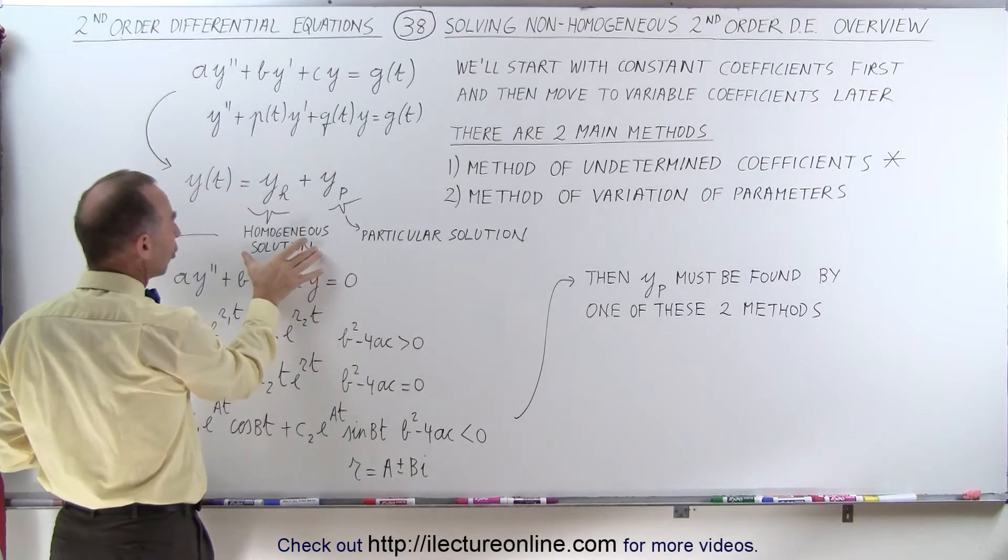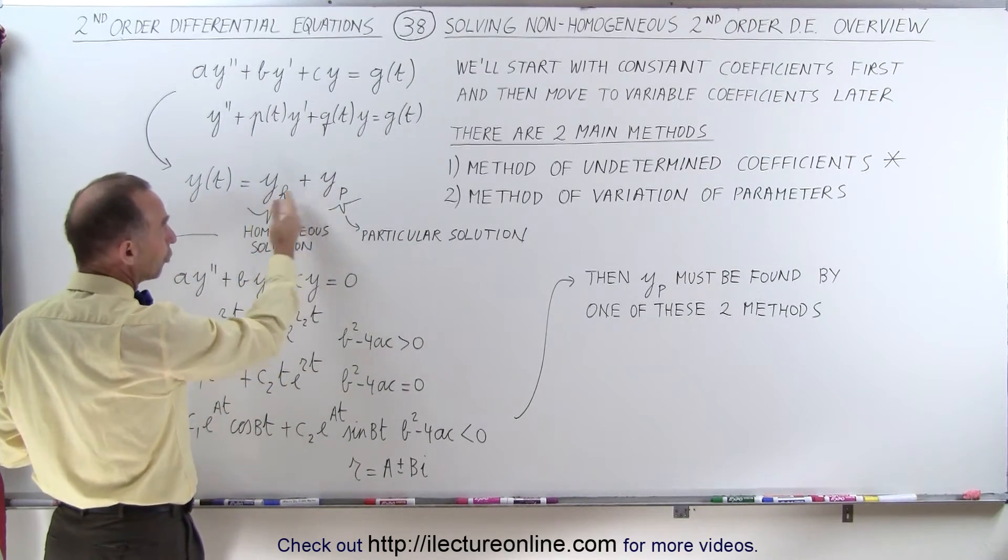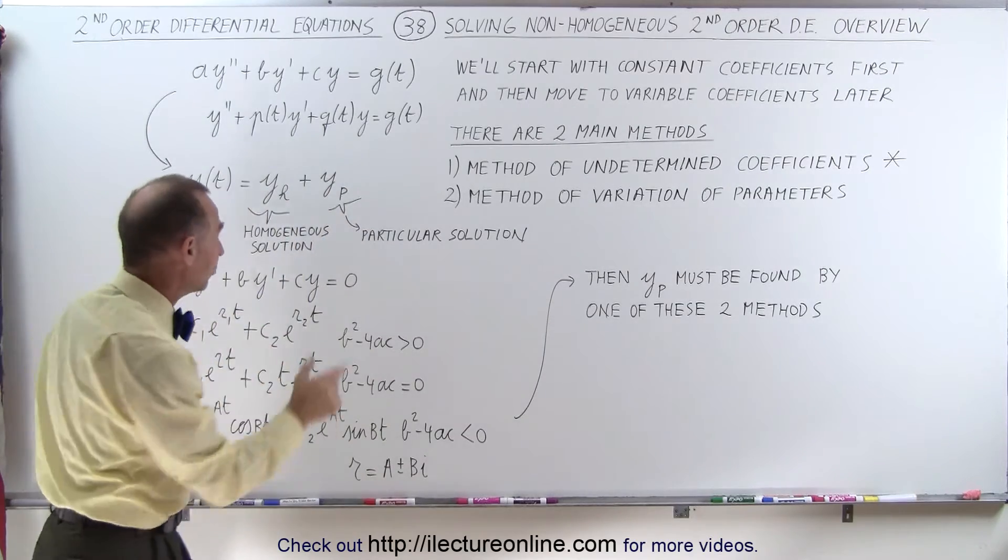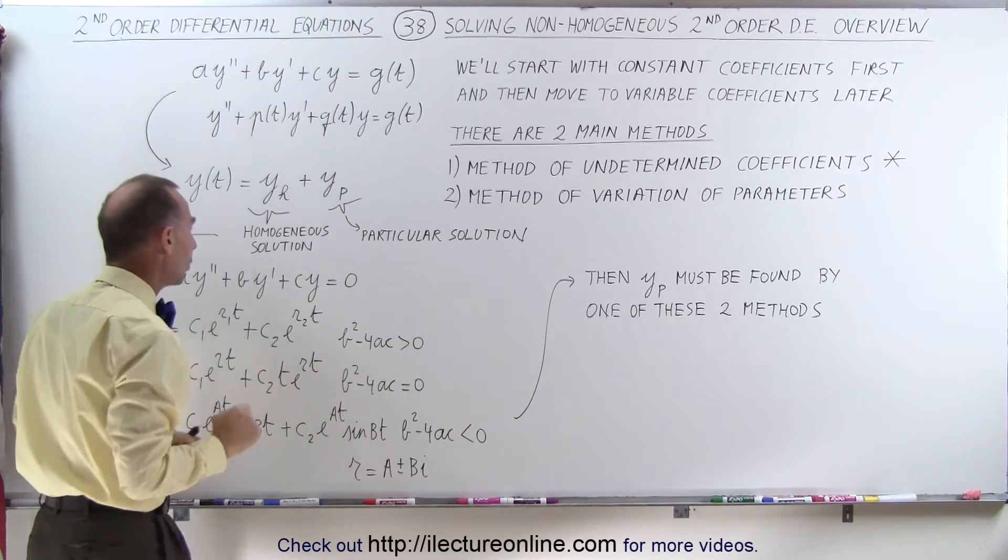Now, the way we get the homogeneous part of the solution, and by the way, all we have to do is just simply add those two solutions together to form the complete solution to the differential equation.